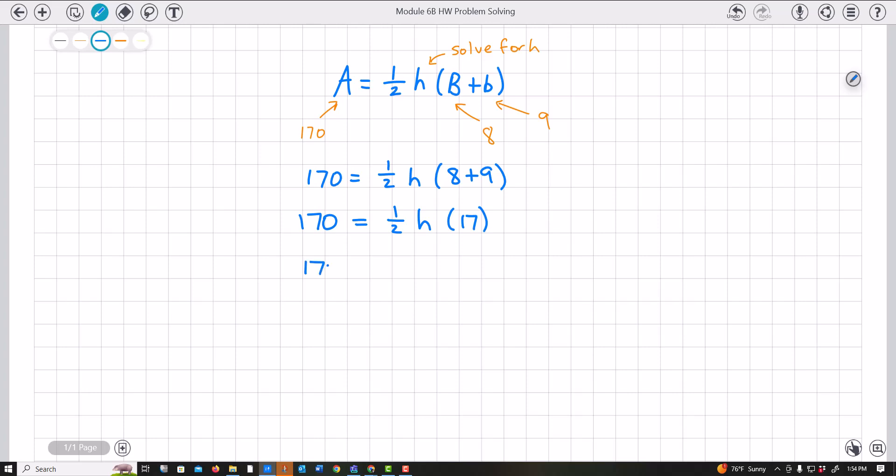If I put all of these are being multiplied, so it doesn't really matter the order, I could write that as 17 over 2, because I multiplied like 17 over 1 times this fraction.